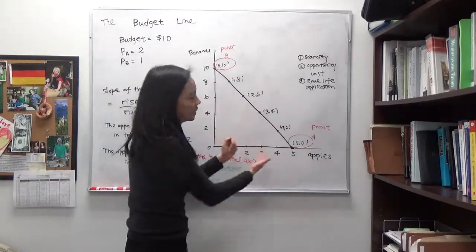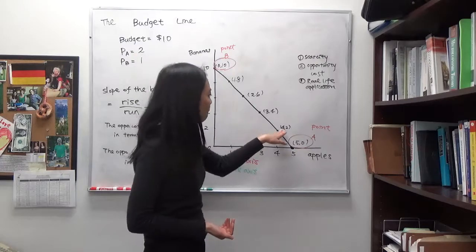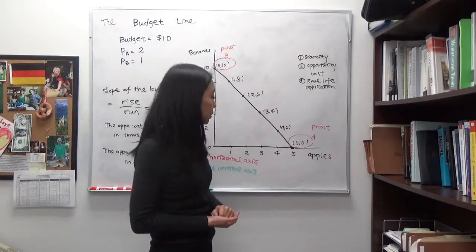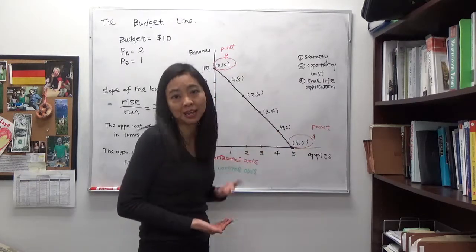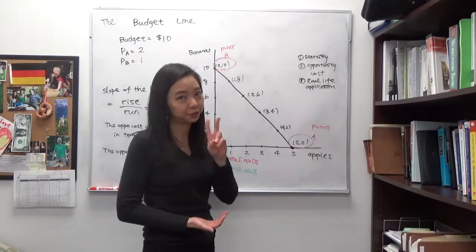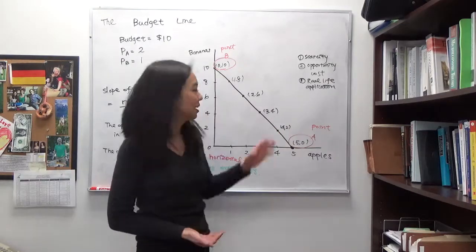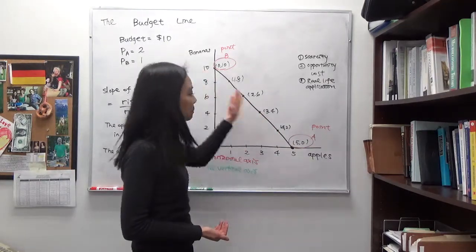Of course you can buy any combination between the two. You can buy 4 apples and 2 bananas. If you buy 4 apples, that means you use 4 times 2, 8 dollars on apples. Then you have 2 dollars left to buy bananas and that will get you 2 bananas. And so on and so forth. You have several combinations.